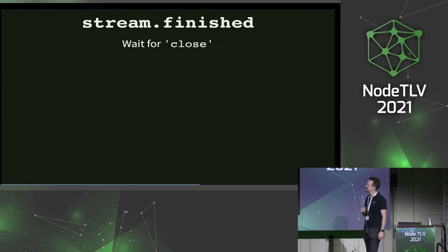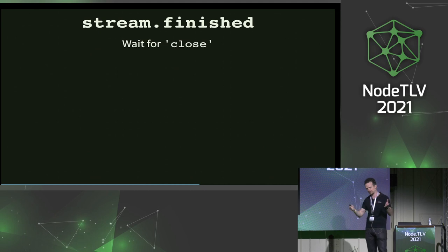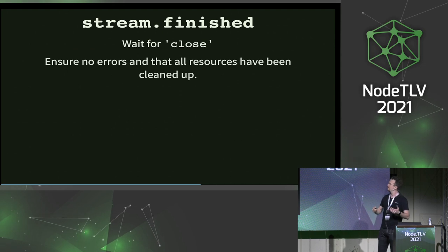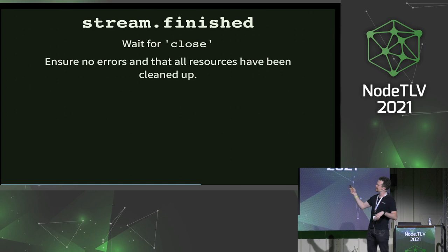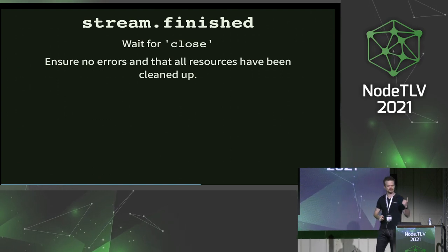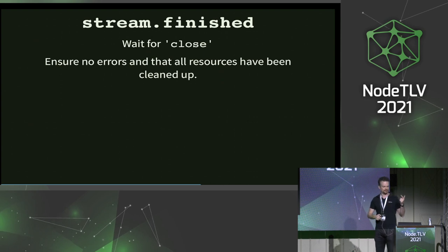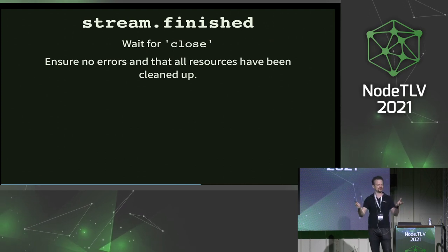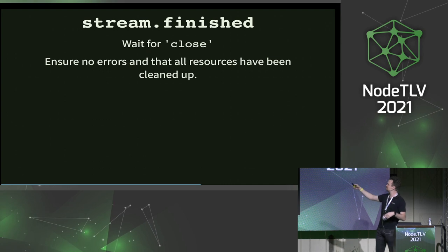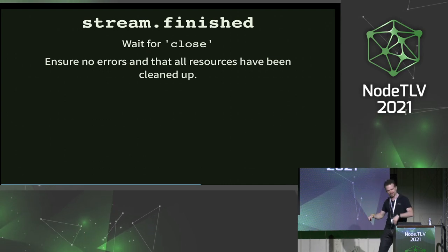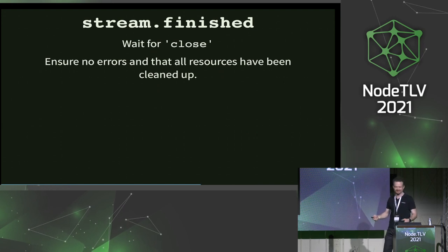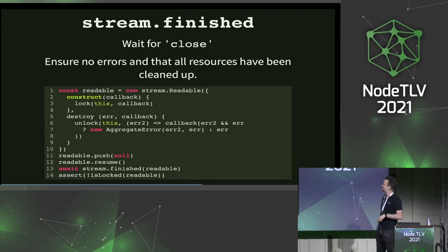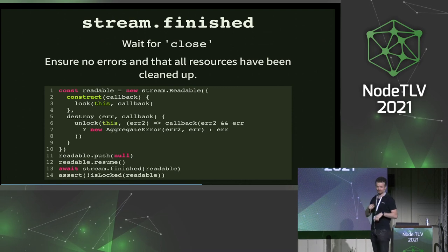The first thing we've changed is that in the past, stream.finished would only wait for the end and/or the finish event — it wouldn't actually wait for the streams to close. Why is that important? Because it's not until close that you know there were no errors and that all the resources have been cleaned up. Things I've noticed in the wild: when a stream has some kind of mutex, you would call stream.finished and assume the mutex has been released. But that wasn't always the case because it would finish when it got the end event. That's something we've changed.